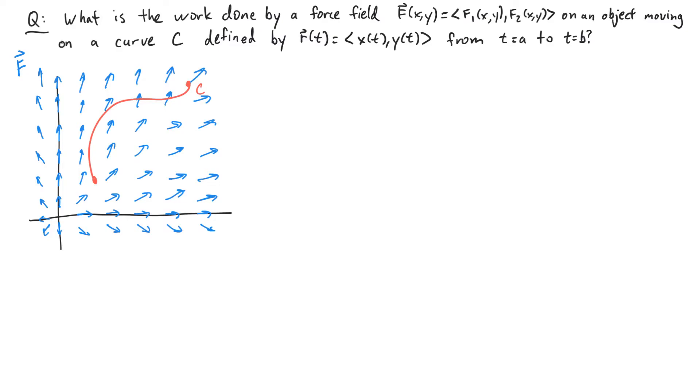So the way we're going to calculate the total amount of work done is by setting up a Riemann sum. Our first step is to divide up our curve into smaller pieces. Next, on each small piece, I'm going to approximate the work done by assuming two things.